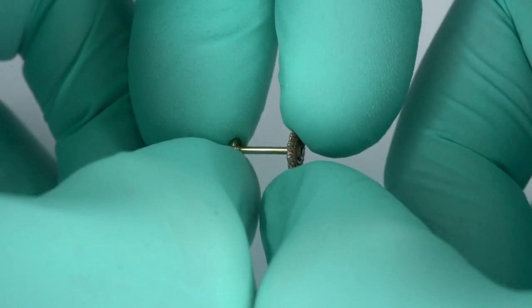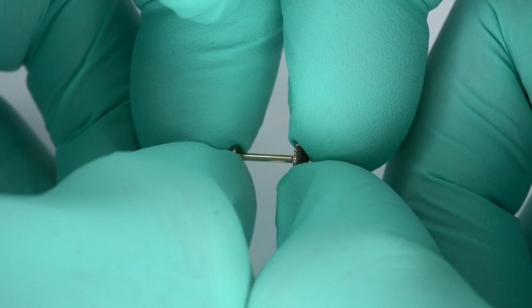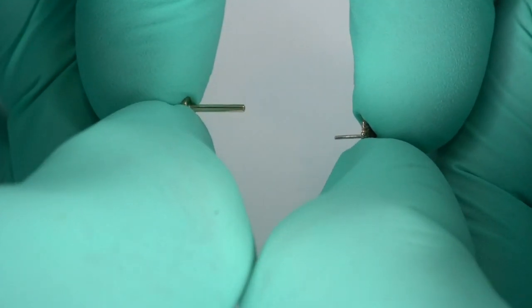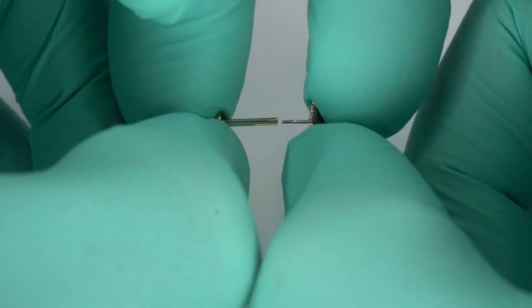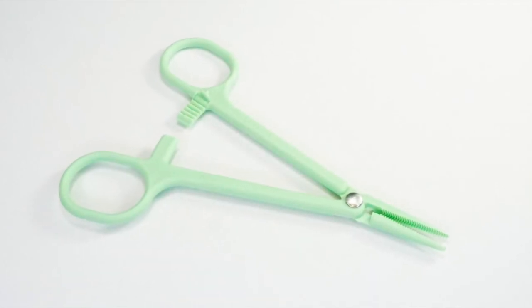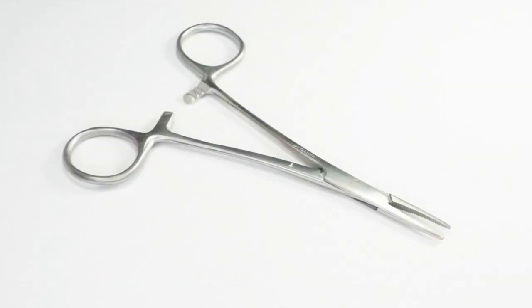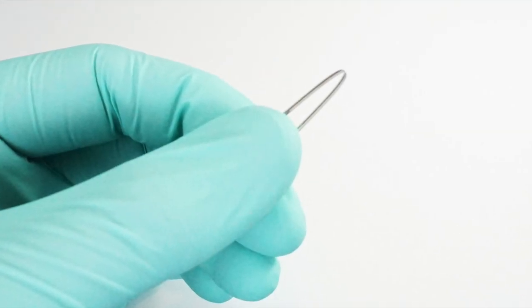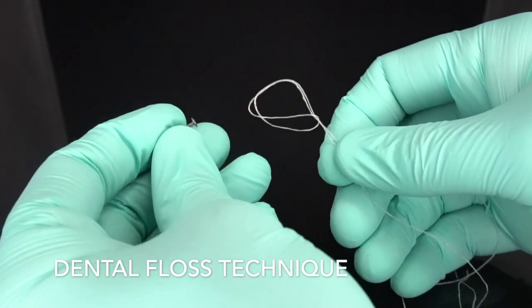In areas like the nose, where it is often difficult to grab the inside portion, you may want to use a tool to grab the inside disc or ball. There are a lot of ways to do this, including the use of hemostats or even sterilized folded wire. We will cover those techniques in another video, but in this video, we'll demonstrate the dental floss technique.